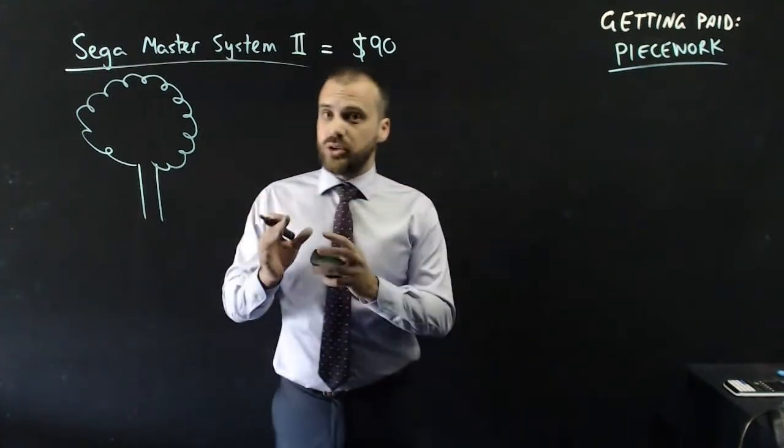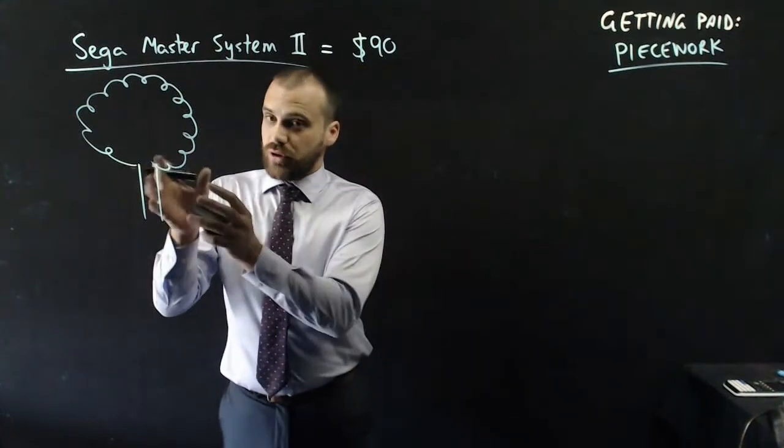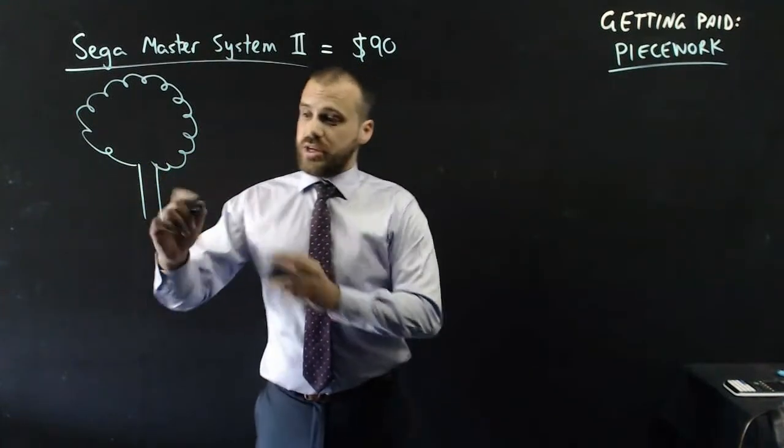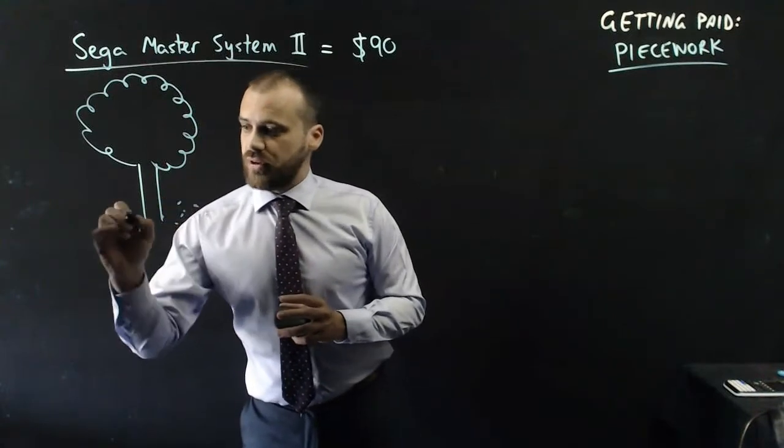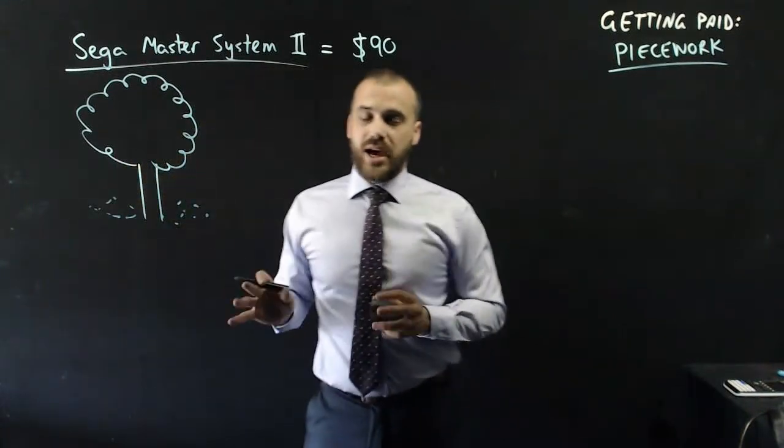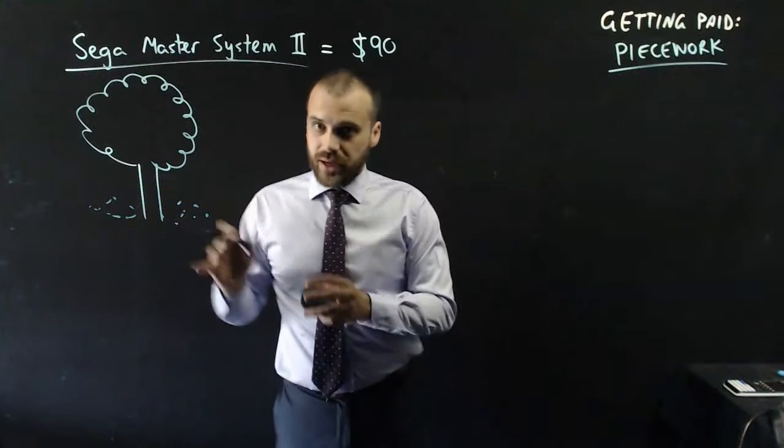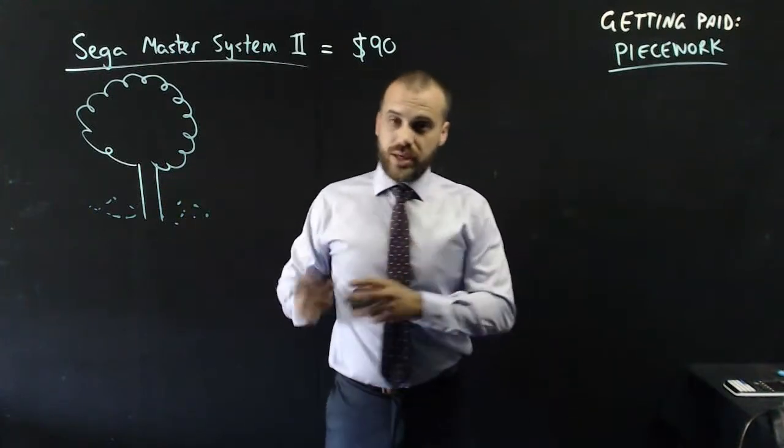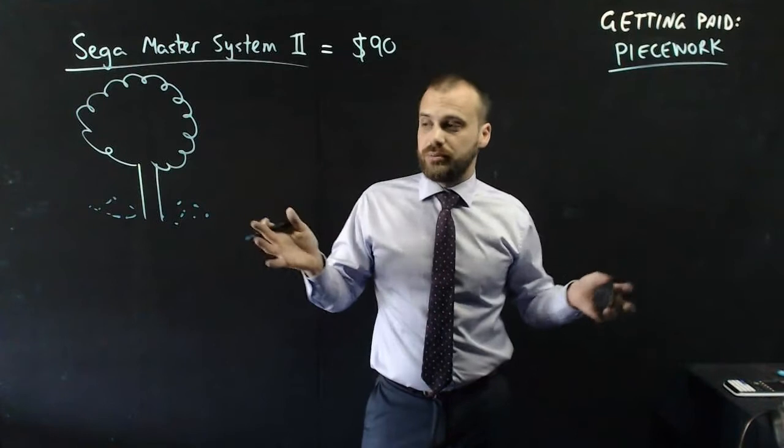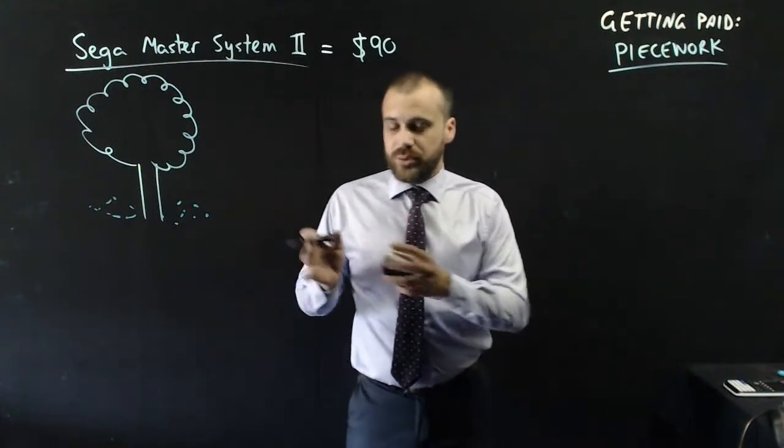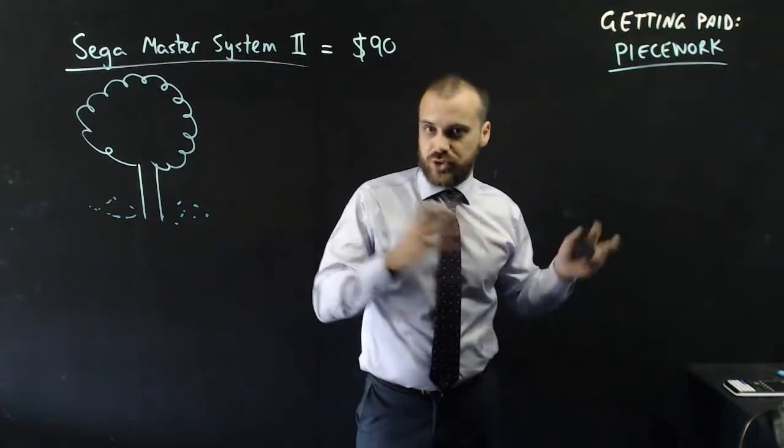So what our Uncle Bruno used to do was walk down the aisle, grab the tree, and shake the tree until all of the apples fell onto the ground. And it was my brother and I's job to pick up those apples and put them into a big box, a really big box. And then Uncle Bruno would take that box away to the apple juice factory.